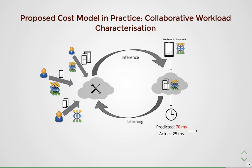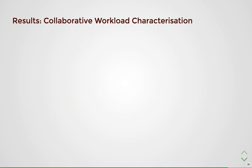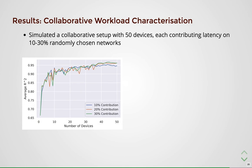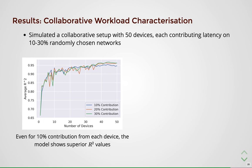As more users contribute to this collaborative framework, the cost model becomes more accurate, leading to better predictions. This democratization of training data makes it possible to learn the cost model in a collaborative setting. To evaluate the benefits, we ran a simulation with 50 devices, each contributing its representation and training data of latencies on 10 to 30% randomly chosen networks from the superset of all 118 networks. The performance in terms of average R-squared increases steadily as more devices are added. Surprisingly, even with just 10% contribution from each device, we are able to learn accurate cost models.